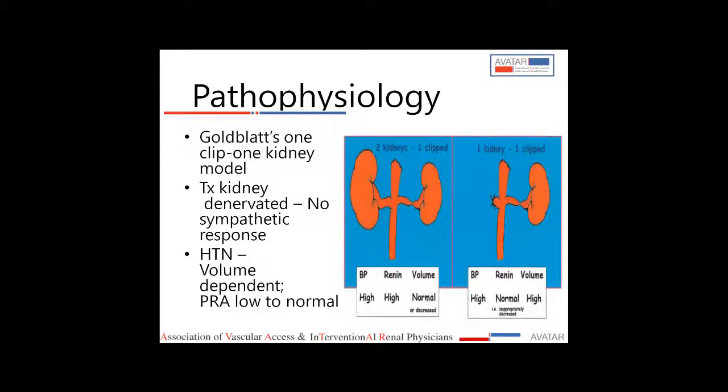Regarding the pathophysiology of TRAS, the TRAS kidney behaves like a one-kidney, one-clip model. The stenosis causes ischemia to the entire renal mass, resulting in activation of the renin-angiotensin system leading to sodium and volume retention. It is the retained volume that maintains perfusion to the stenotic kidney. Therefore, we should not aggressively lower blood pressure by giving diuretics or ACE inhibitors in these patients. TRAS is a type of volume-dependent hypertension with low levels of renin.